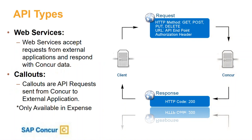SAP Concur offers two types of APIs to our clients. One is vastly used more than the other — regular web services calls. Web services basically accept requests from external applications and respond with Concur data. Your application sends an HTTP request — a GET, POST, PUT, or DELETE — and it performs a specific task with an authorization header containing a valid access token. You send us a request, we return real-time with data. That's one of the biggest advantages of APIs: you can perform your integrations in real-time.